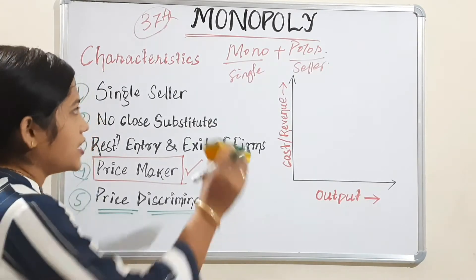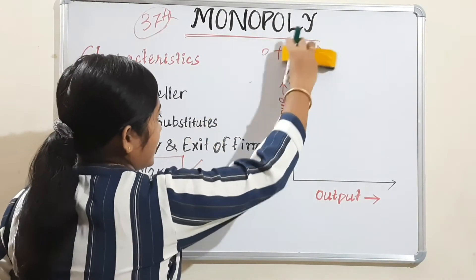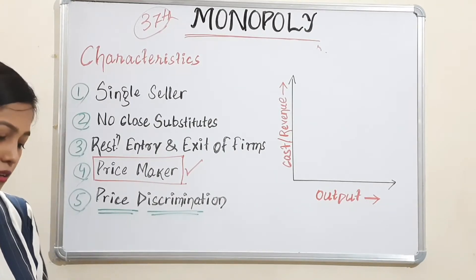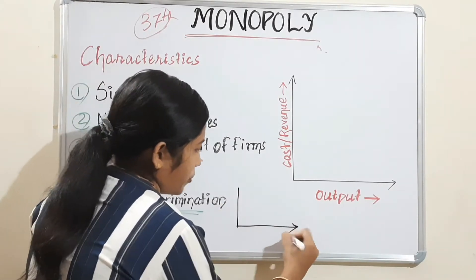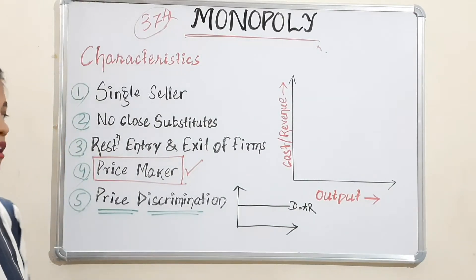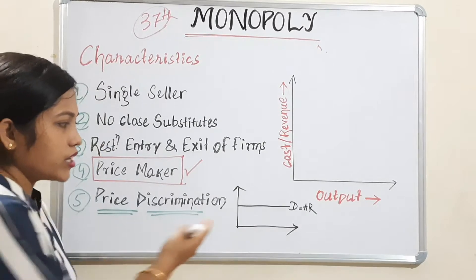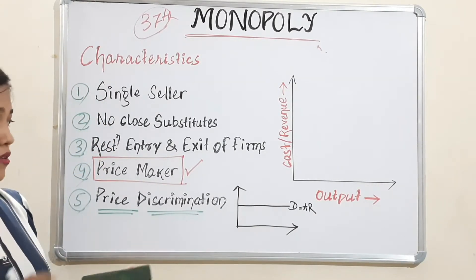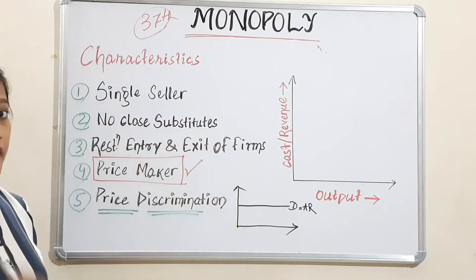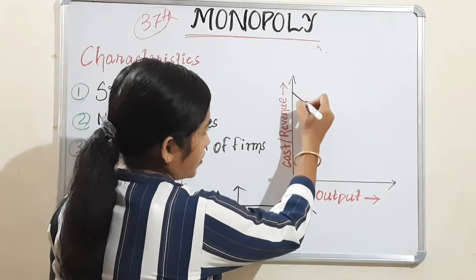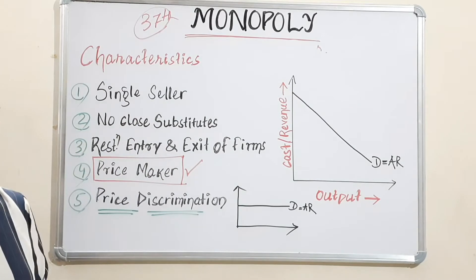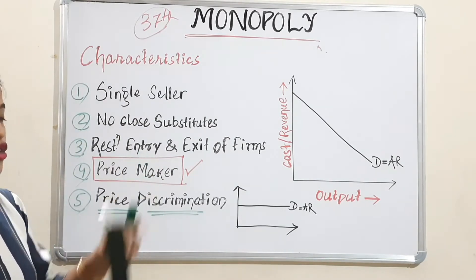Now let's see the demand curve. Remember: mono means single, polos means seller — that is where the name monopoly came from. In perfect competitive market, the demand curve — which equals average revenue — was horizontal, because a very small price change would affect quantity demanded very highly. But in case of monopoly, the demand curve or average revenue curve will be downward sloping. Also remember it should be less elastic, meaning the curve will be a little bit stiffer.